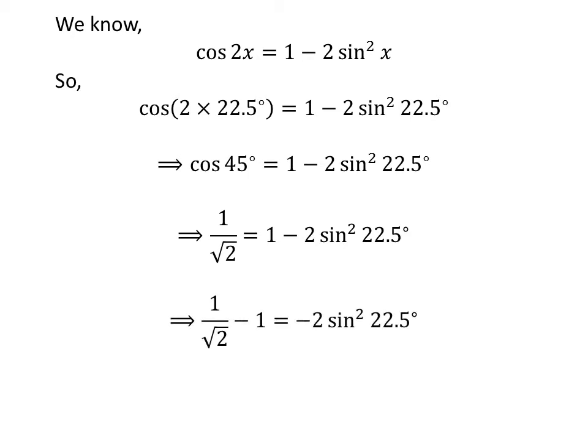Here, I have shifted 1 from the right hand side of the equation to the left hand side. So, 1 upon square root of 2 minus 1 is equal to minus 2 times the square of sine of 22.5 degrees. Multiplying the whole expression by minus 1 and changing sides gives us: 2 times the square of sine of 22.5 degrees is equal to 1 minus 1 upon square root of 2.